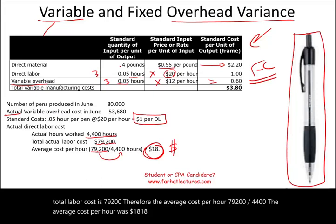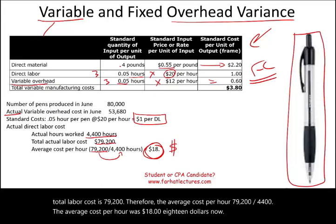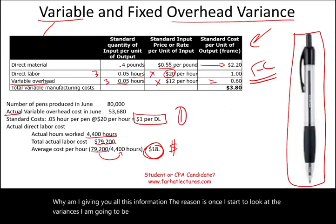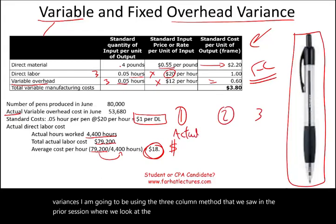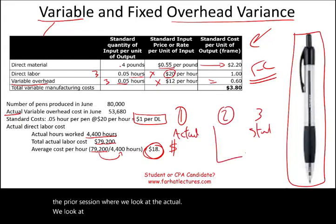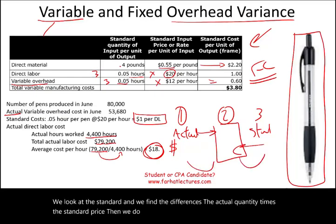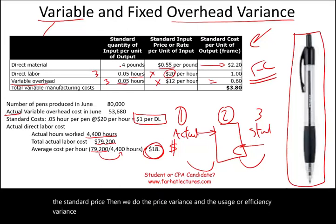Now, why am I giving you all this information? Once I start to look at the variances, I'm going to be using the three-column method that we saw in the prior session, where we look at the actual, the standard, and find the differences — actual quantity times standard price — then compute the price variance and the usage or efficiency variance. Please copy this data down; we're going to look at it on the next slide.